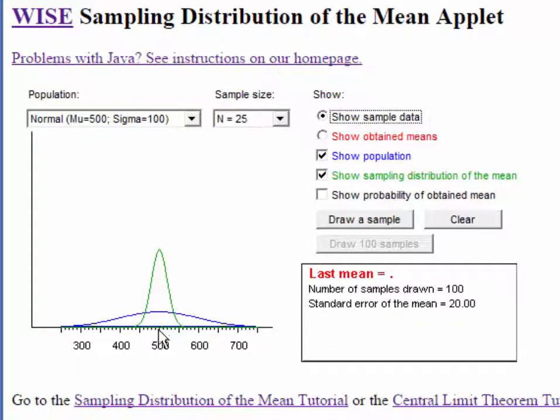Now, what is the likely error for this distribution? Well, first we need to find the standard error. The standard error is the population standard deviation, which is 100 divided by the square root of the sample size, square root of 25 is 5, 100 divided by 5 is 20. The standard error of the mean is 20. And so then the likely error is about double that, around 40, actually 1.96 times 20.